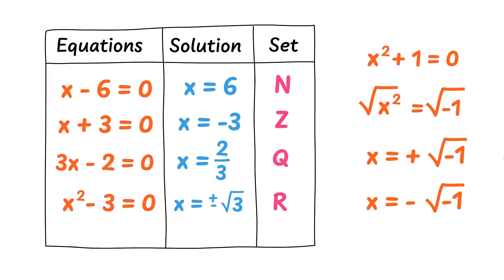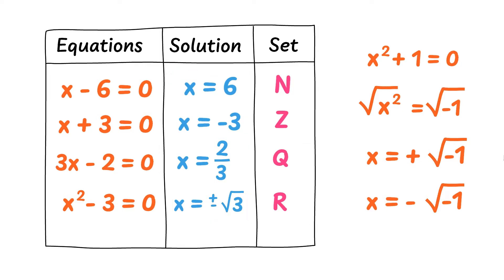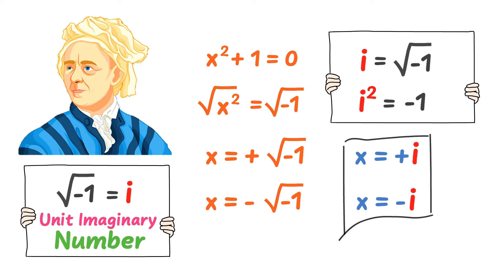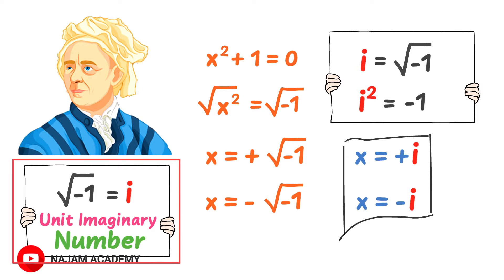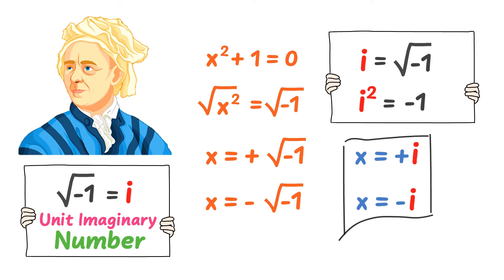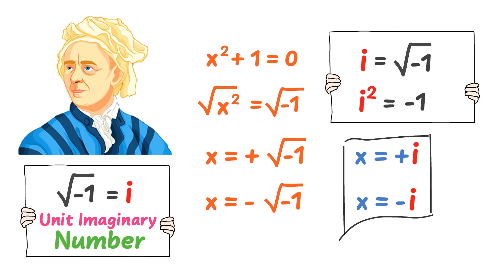To summarize, we learned that the solutions of different algebraic equations usually lie in a set of real numbers like 6, minus 3, 2 divided by 3, and plus or minus root 3. We also learned that the solution of some algebraic equations like x squared plus 1 is equal to 0 was not previously possible. But now, with the help of the unit imaginary number i, where square root of negative 1 is equal to i, we can easily solve them. This was all about imaginary numbers.